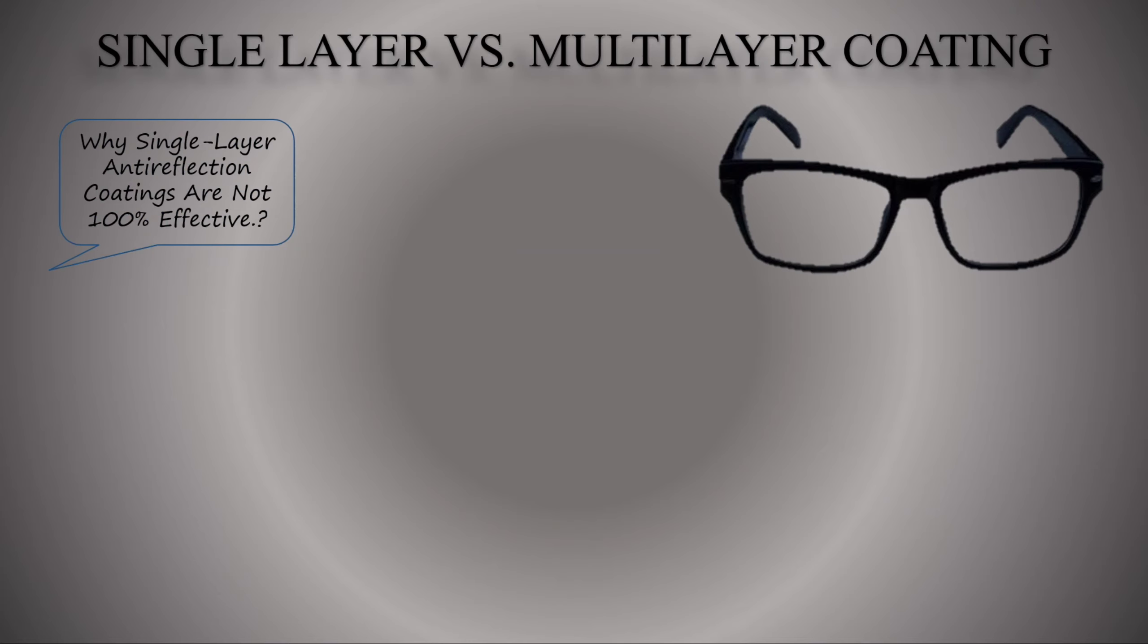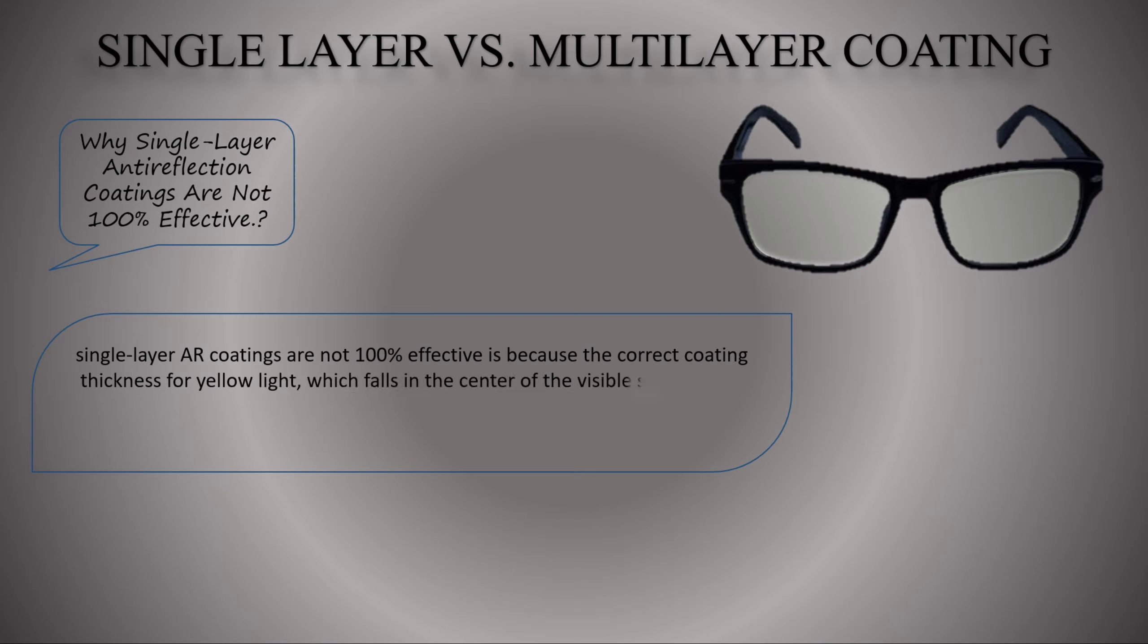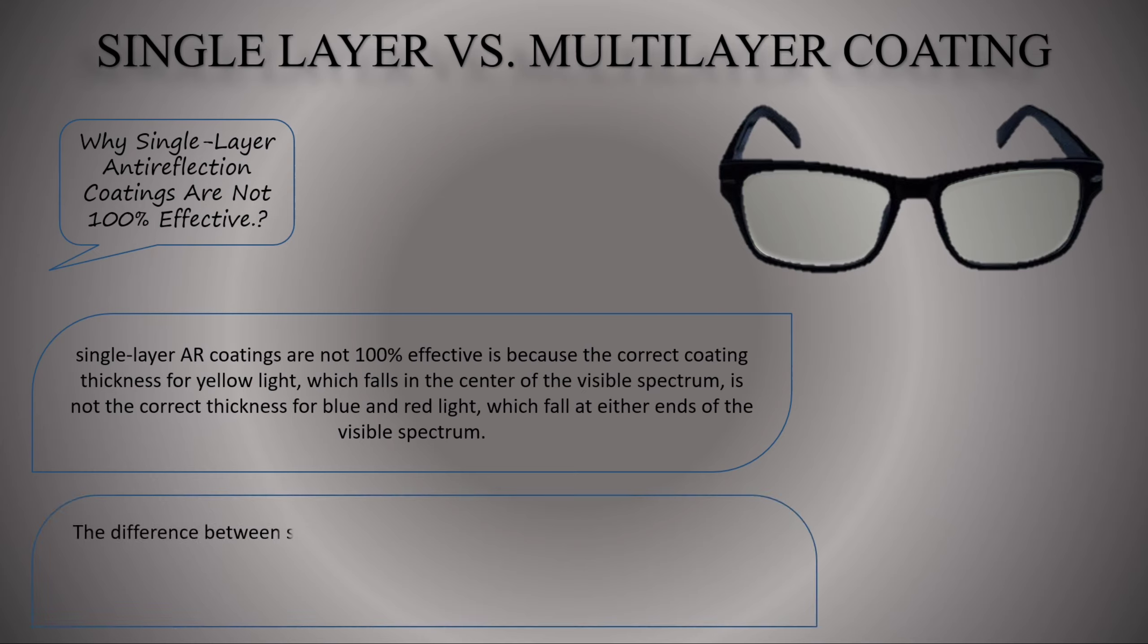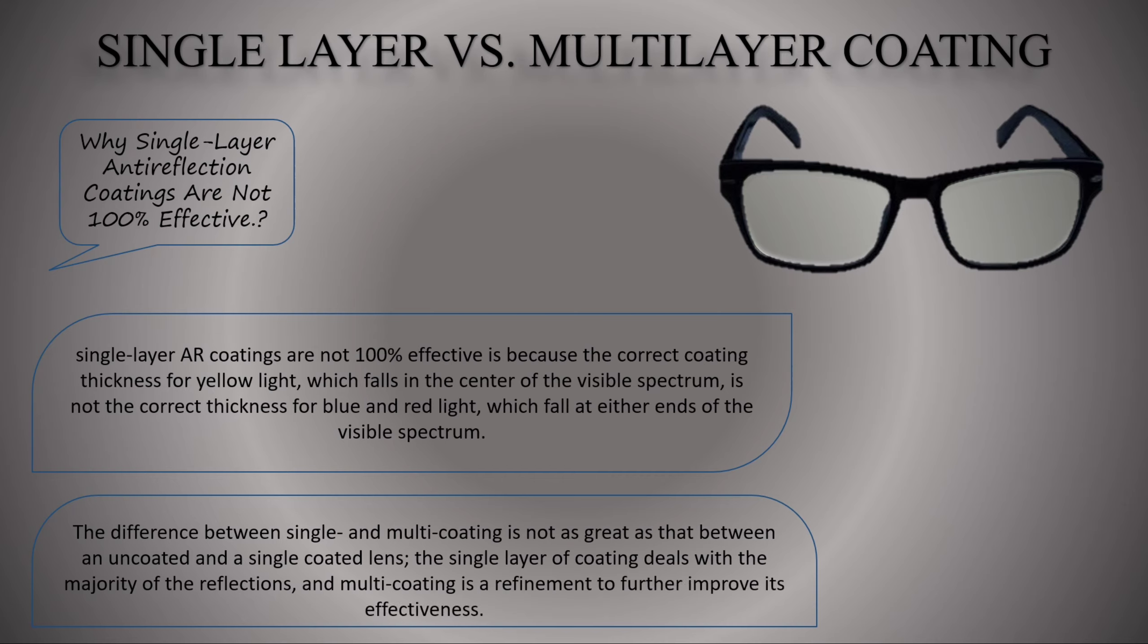Single layer versus multi-layer coatings. Single layer AR coatings are not 100% effective because the correct coating thickness for yellow light which falls in the center of the visible spectrum is not the correct thickness for blue and red light which fall at either ends of the visible spectrum. The difference between single and multi coatings is not as great as that between an uncoated and a single coated lens. The single layer of coating deals with the majority of the reflections and multi-coating is a refinement to further improve its effectiveness.